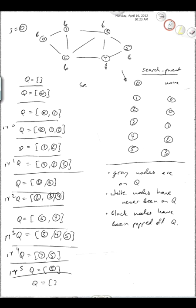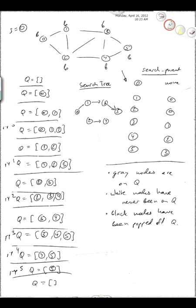Another thing to point out is that the search parent actually defines something called a search tree. The search tree is a graph that explains how we explored everything during breadth-first search. It has the same nodes as the original graph: 0, 1, 2, 3, 4, and 5. We use search parent to tell us what edges to draw. So 5's search parent is 3, 4's is 2, 3's is 1, 1's is 0, and 2's is 0. That is the search tree from running BFS on this example.